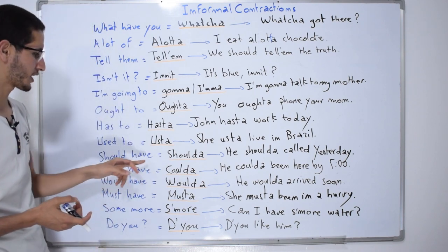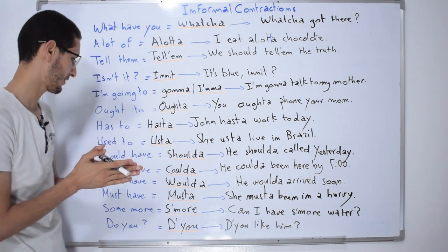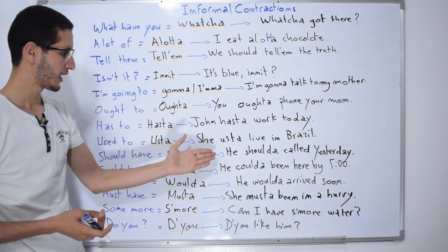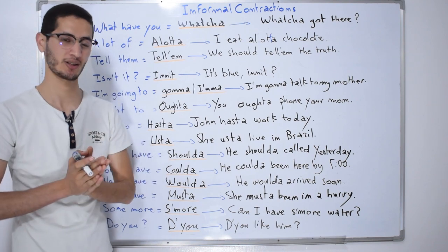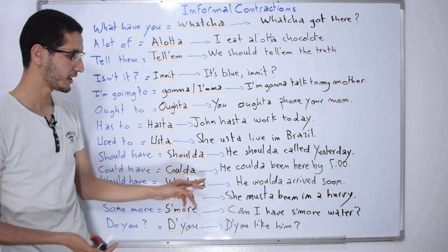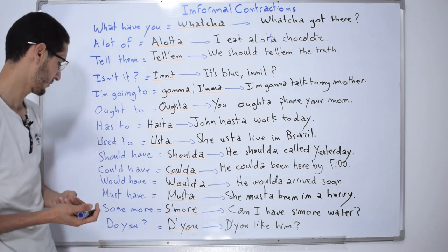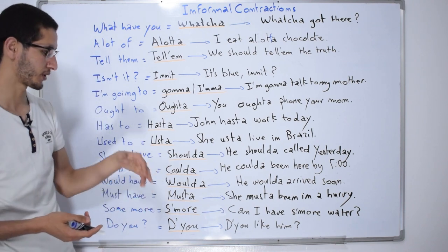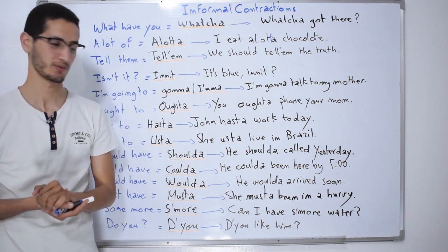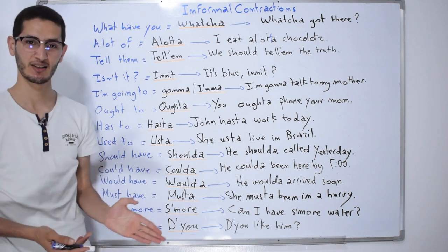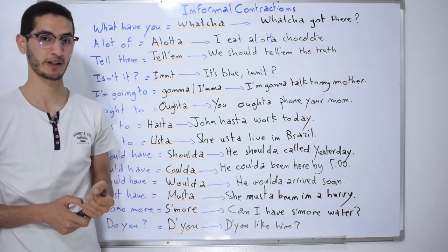Modal verbs used with 'have' all get an A at the end. 'Should have' becomes 'shoulda' — 'He shoulda called yesterday.' 'Could have' becomes 'coulda' — 'He coulda been here by five.' 'Would have' becomes 'woulda' — 'He woulda arrived soon.' And 'must have' becomes 'musta' — 'She musta been in a hurry.'